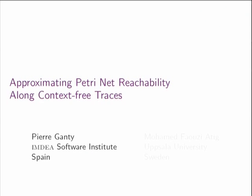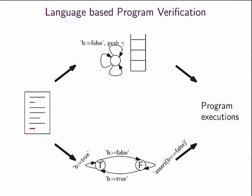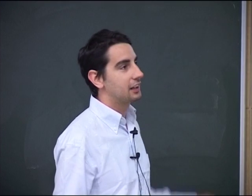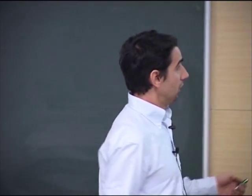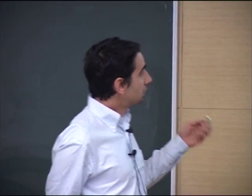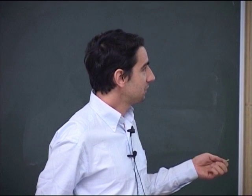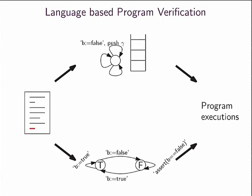Good afternoon everybody. My pleasure to be here. I'm interested in program verification, and one way to do it is to use the language-based approach. On the left side, you have a sequential program with some safety property, like a violation of some assertion. One way to check this property algorithmically is to use a language-based approach.